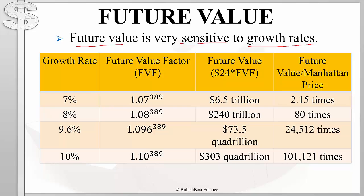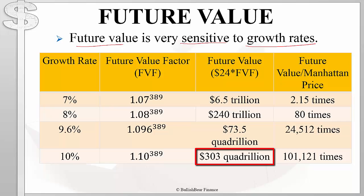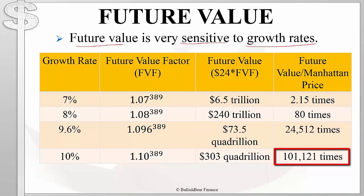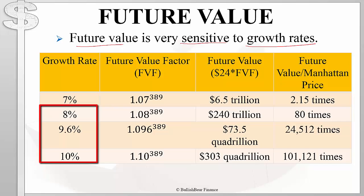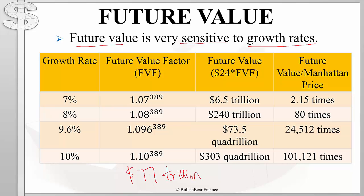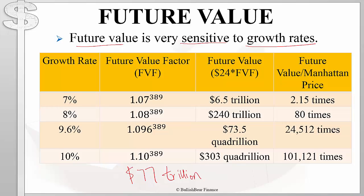At a 7% growth rate, the future value would be six point five trillion dollars, which would still be more than double the current price of Manhattan. On the other extreme, if our growth rate was ten percent, we would grow that twenty-four dollars into three hundred and three quadrillion dollars — over one hundred thousand times the current price of Manhattan. These growth rates of 8%, 9.6%, and 10% are unrealistic because the global economy today is worth only about seventy-seven trillion dollars.